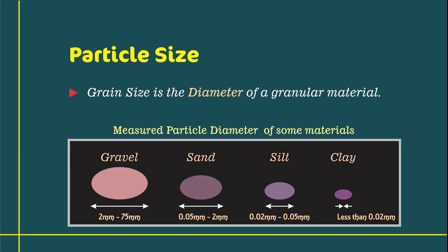Sand will have a distributed diameter between 0.05 to 2mm. Clay even has a diameter which is less than 0.02mm.